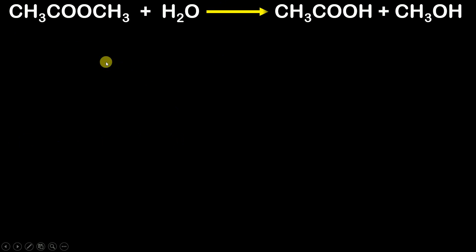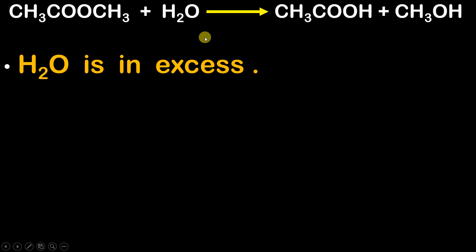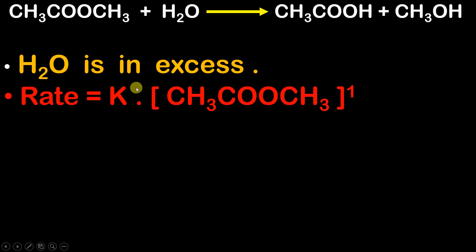For another example, consider the hydrolysis of methyl acetate. In this reaction, H₂O is present in excess — H₂O is acting like the sea, and methyl acetate is acting like the water tank. Therefore, when you calculate the rate, you only consider the molar concentration of CH₃COOCH₃ (methyl acetate). Hence, this is also a pseudo first order reaction.